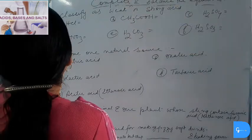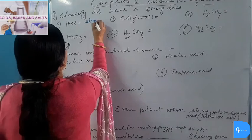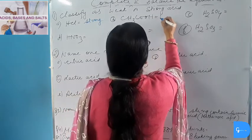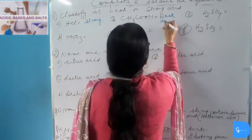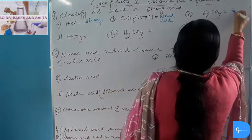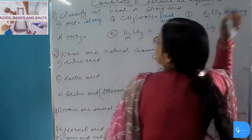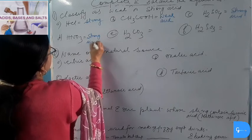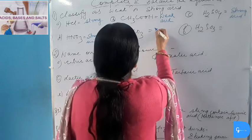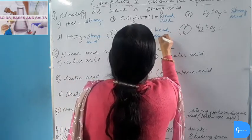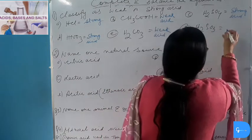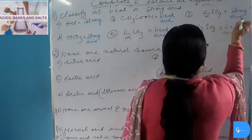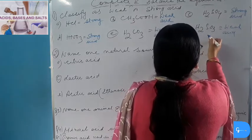Classify as weak or strong acid: Hydrochloric acid — strong acid (mineral acid). Acetic acid (CH₃COOH) — weak acid. Sulphuric acid (H₂SO₄) — strong acid. Nitric acid — strong acid. Carbonic acid — weak acid. Sulphurous acid (H₂SO₃) — weak acid. Note: H₂SO₄ is strong but H₂SO₃ is weak.